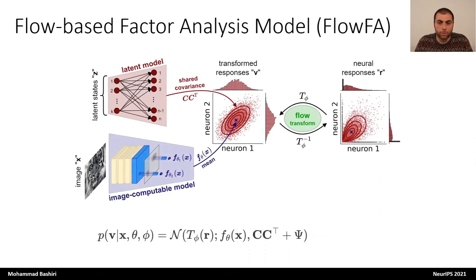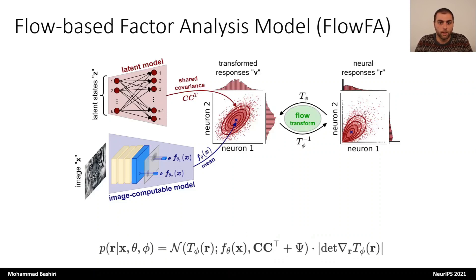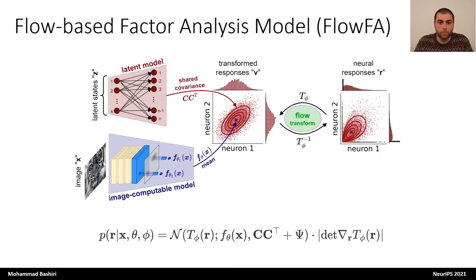One last step is to compute the probability over neural responses instead of the transformed responses. To do that, we need to add one additional term to the equation, which is the absolute determinant of the Jacobian of the transformation, so that we account for the scaling of the probability density as a result of the transformation. With that, we have our complete objective function, which we use to train the model. Because the model combines invertible transformation and factor analysis, we call it the flow-based factor analysis model, in short, FlowFA.